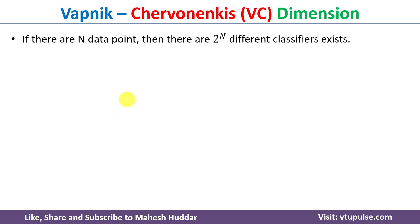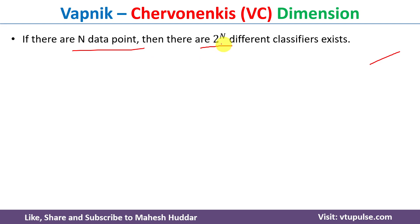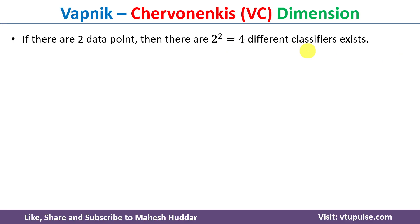Now we will take some examples to understand VC dimension. Initially, I will consider the straight line as a classifier. Before that, we need to understand the number of labelings. If you have n number of data points, then there exist 2 raised to n different classifiers or different labelings.